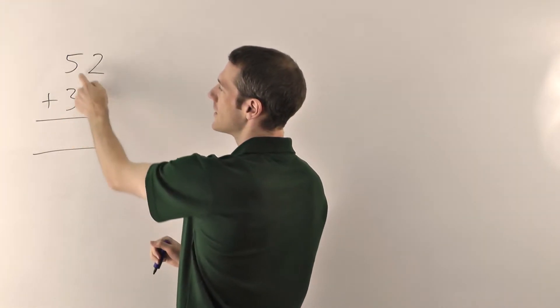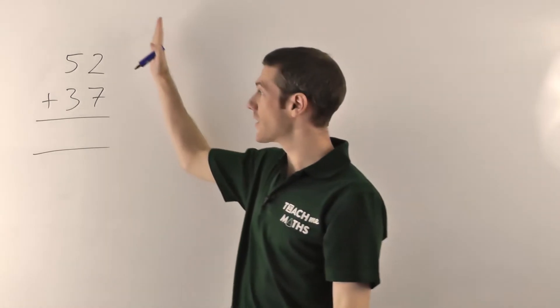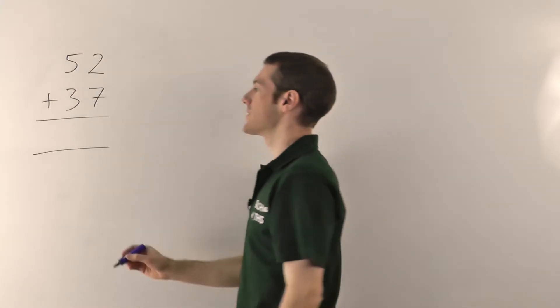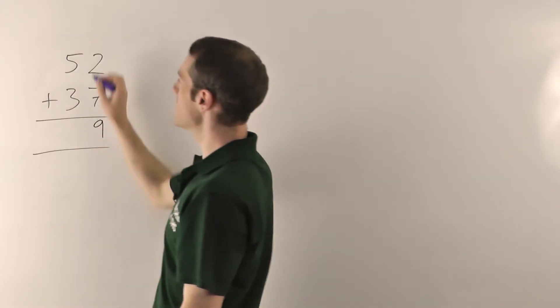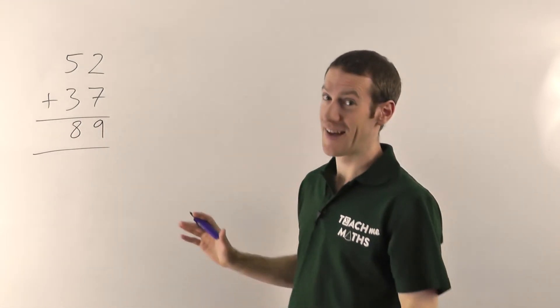So your units column goes here, tens column goes here and then you just add them up in the columns working from the right hand side across to the left. That's all it is. So 2 plus 7 gives you 9 and 5 plus 3 gives you 8. 89! That was easy.